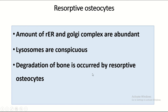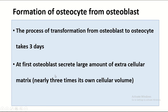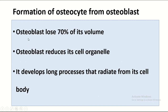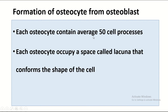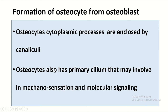The formation of osteocyte from osteoblast takes three days. First, the osteoblast secretes a large amount of extracellular matrix — nearly three times its own cellular volume — so it loses 70 percent of its volume, reducing its organelles. Cytoplasmic processes begin to form; each osteocyte contains about 50 cell processes. Each osteocyte occupies a space called a lacuna, and also possesses a primary cilium that may be involved in mechanosensation and molecular signaling.